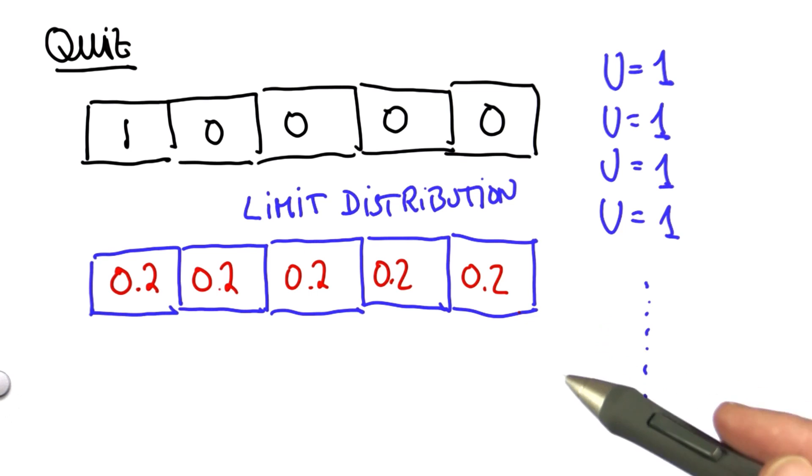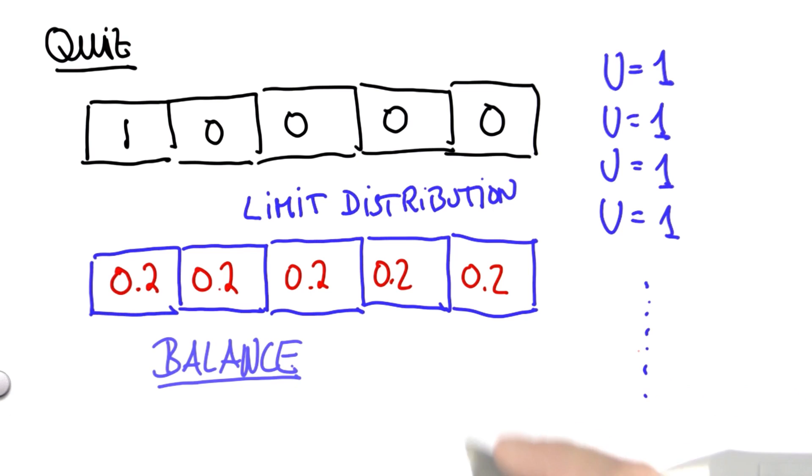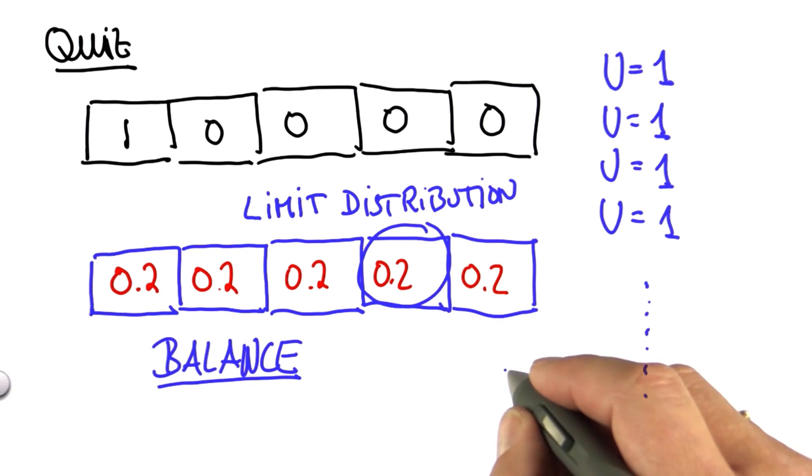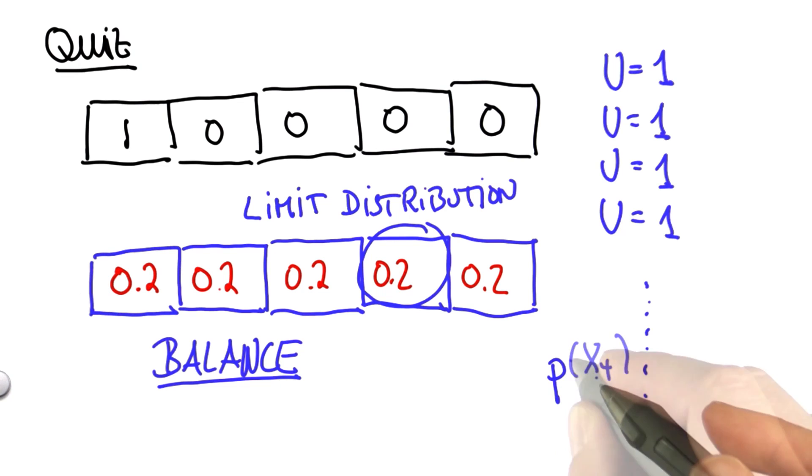There's a way to derive this mathematically, but I can prove a property that's highly related, which is a balance property. Say we take x4, and we'd like to understand how x4 at some time type t corresponds to the previous time distribution over all these variables.